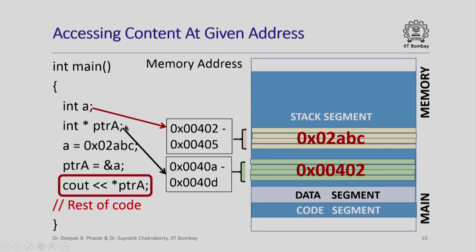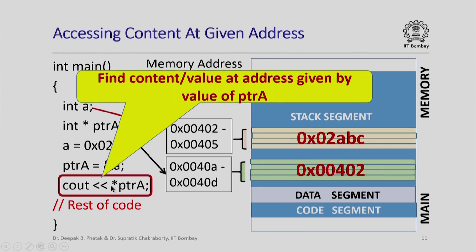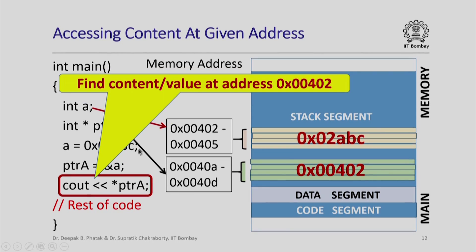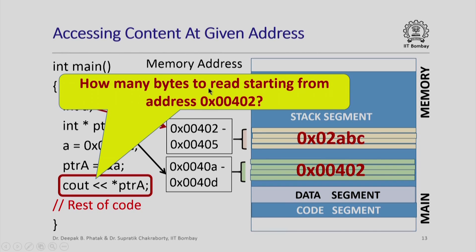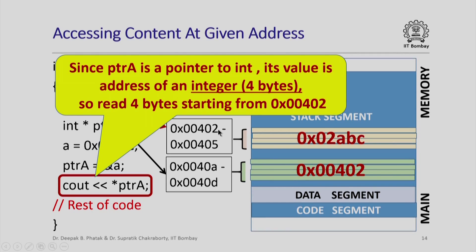Let us see how this works in a real C++ program. We have our previous program augmented with a statement printing the value of star pointer A — this is the unary star operator, the contents-of operator. Basically I am asking: find the content or value at the address given by the value of pointer A. We find the value of pointer A, treat it as a memory address, go to that address, find what value is stored there, and print it out. The value of pointer A is hex 00402, so we find the content at that address.